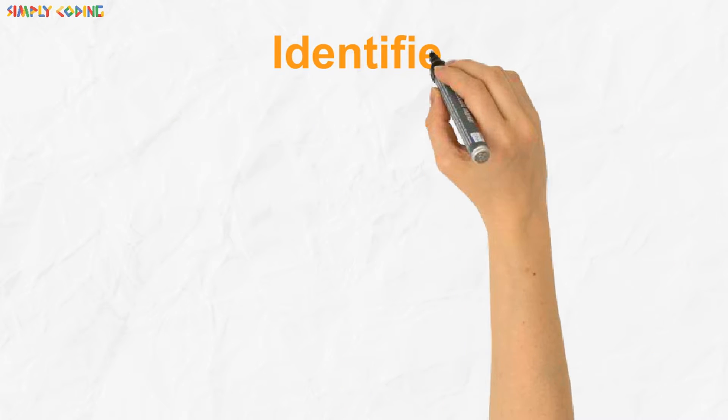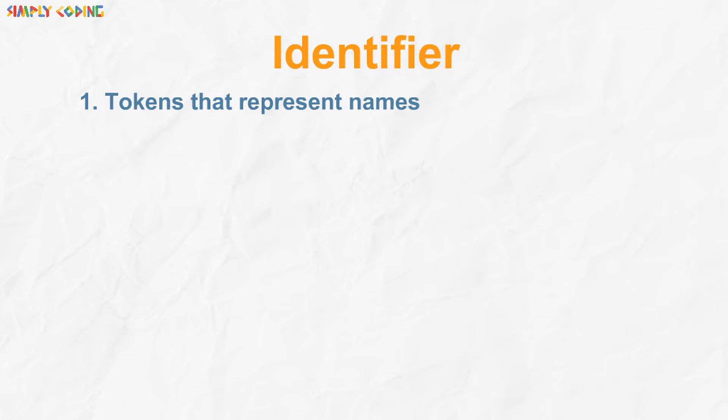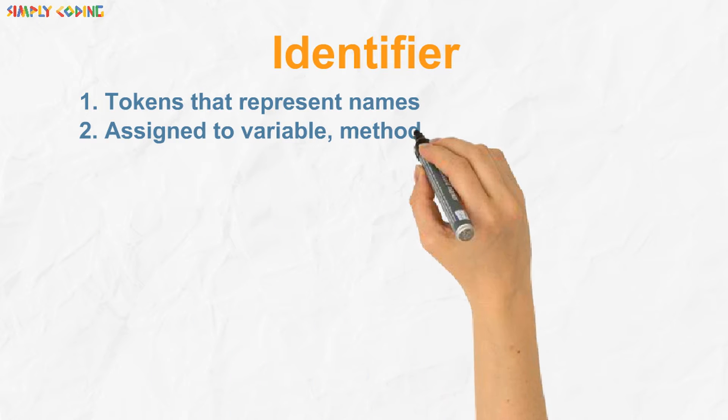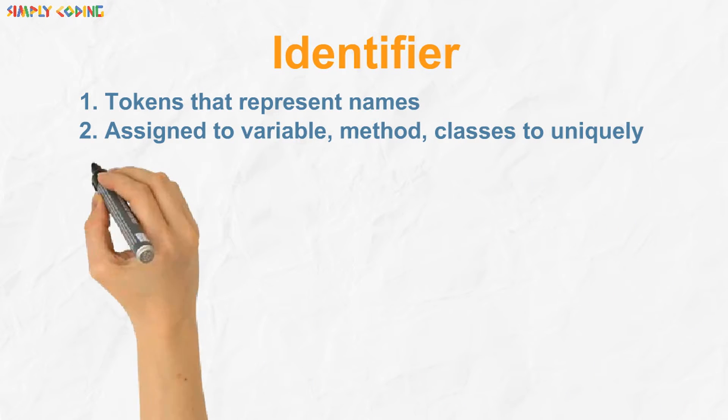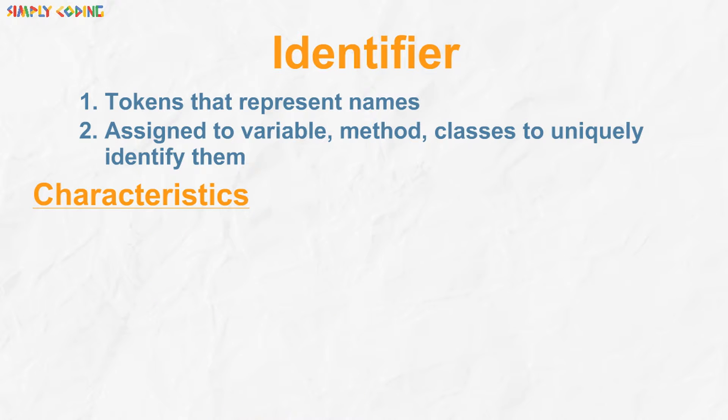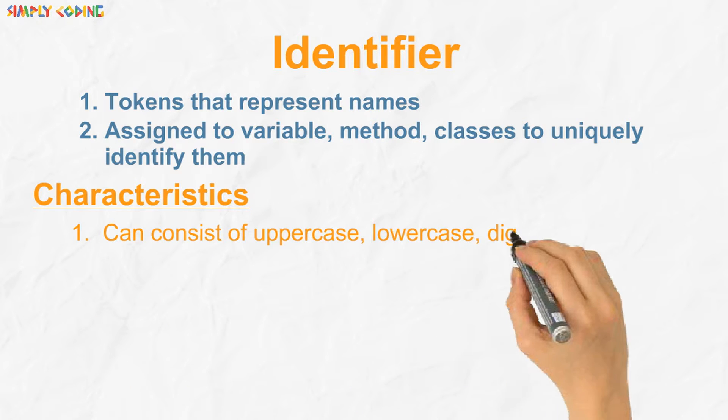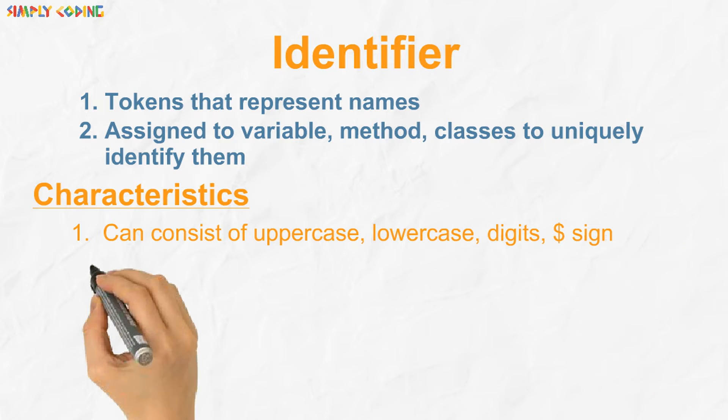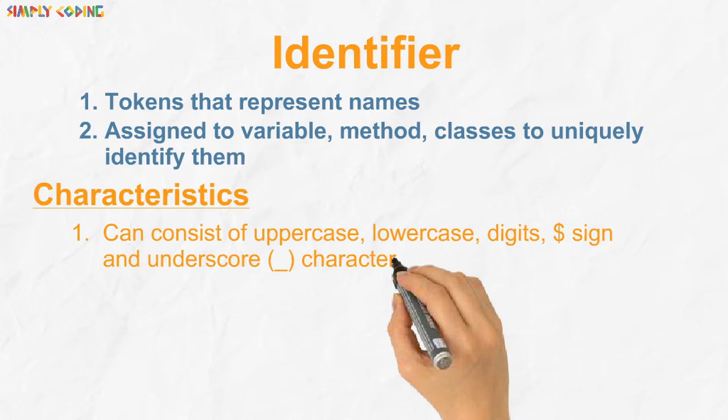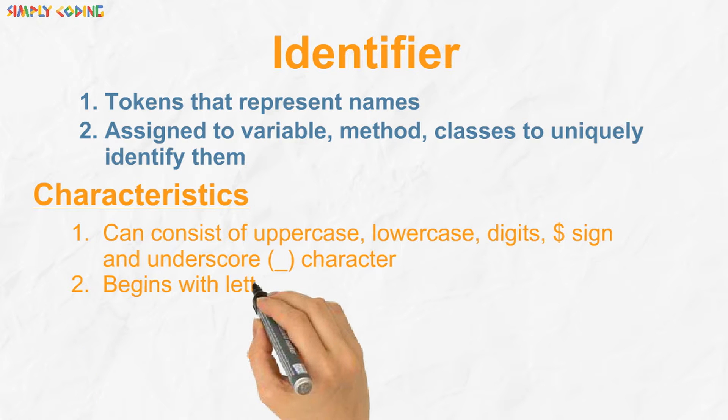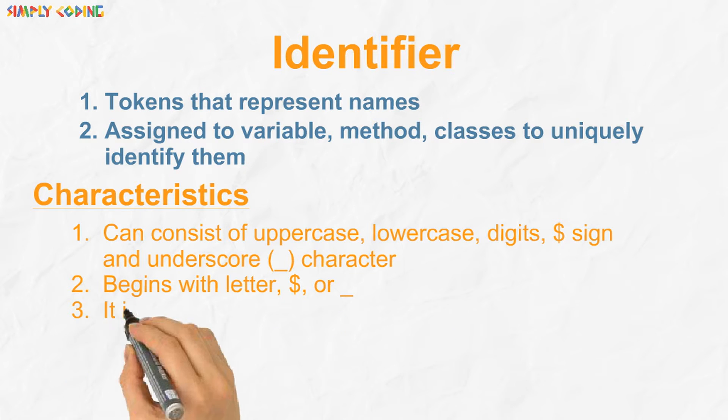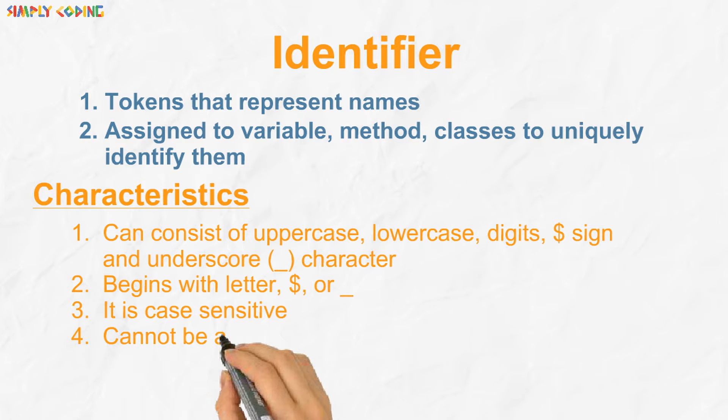Let's now see what is an identifier. Identifiers are tokens that represent names. These names can be assigned to variables, methods, and classes to uniquely identify them to the compiler. A Java identifier must have following characteristics: It can consist of uppercase, lower case, digit, dollar sign, and underscore character. It begins with letter, dollar, or underscore. It is case sensitive. It cannot be a keyword. And it can be of any length.